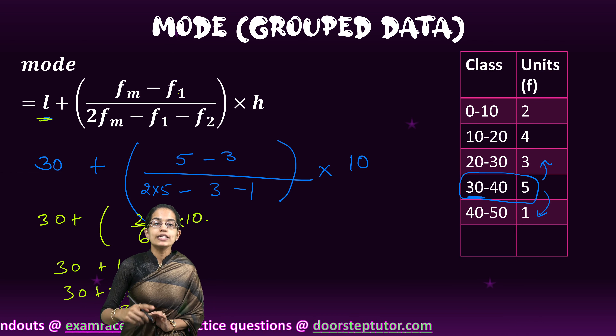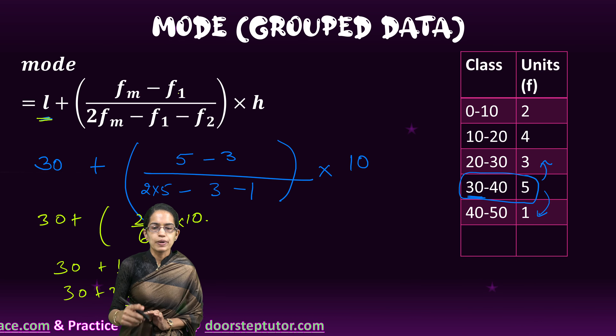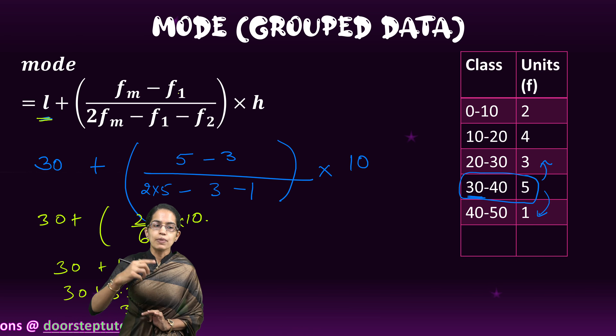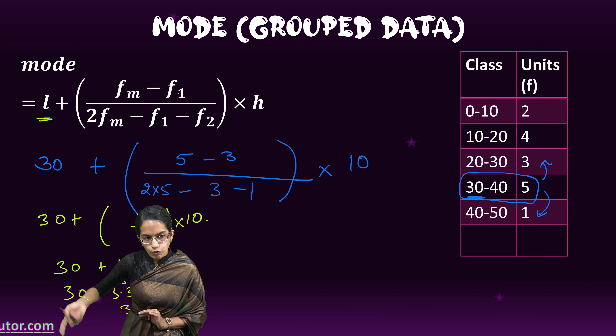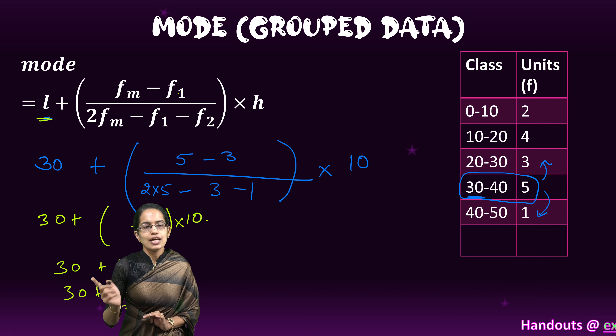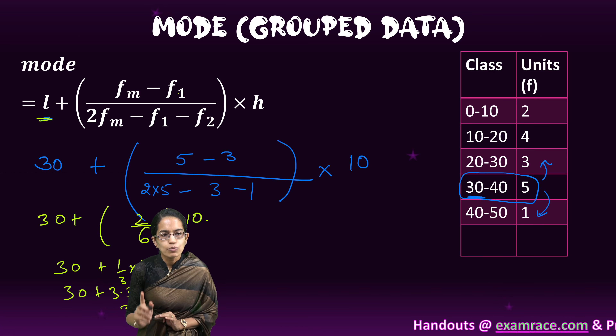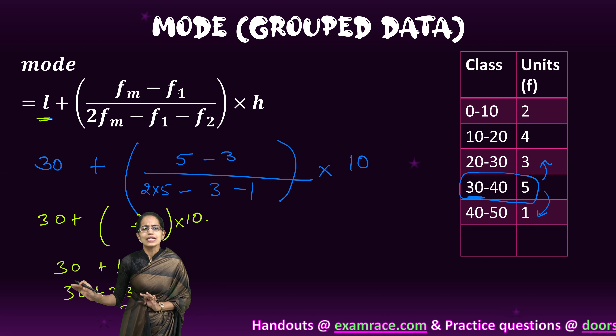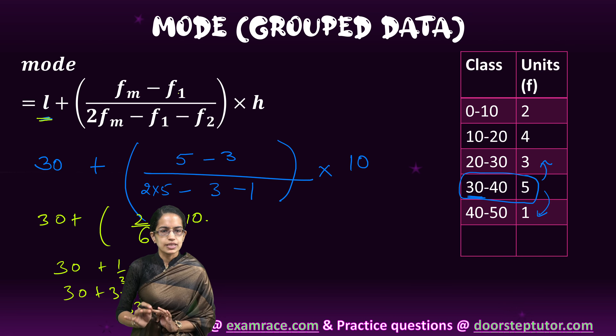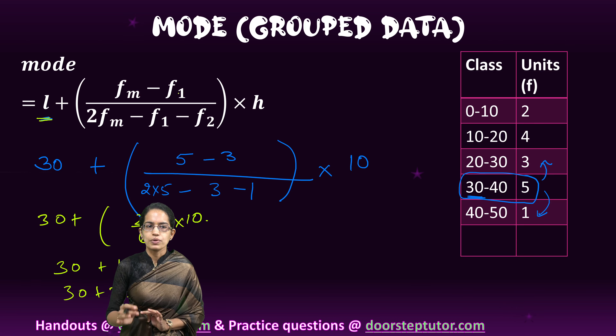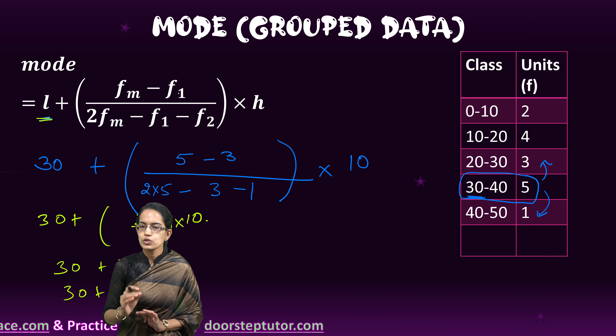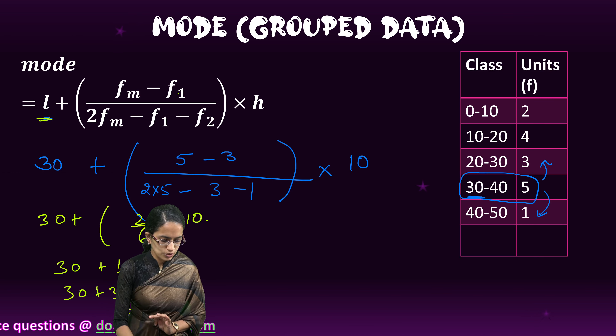To repeat: the mode formula is L plus the frequency of the modal class minus the frequency of the preceding class, divided by twice the frequency of the modal class minus the frequency of the preceding class minus the frequency of the following class, multiplied by the class interval. It is a very straightforward method where you directly apply the formula. This is how we understand mode for both grouped and ungrouped data.